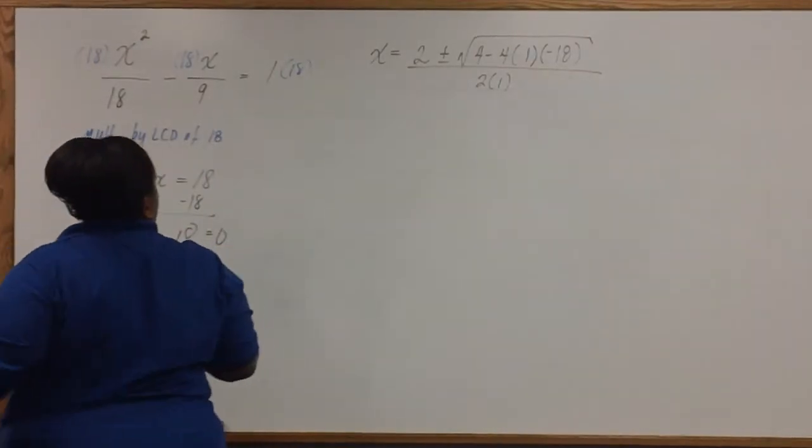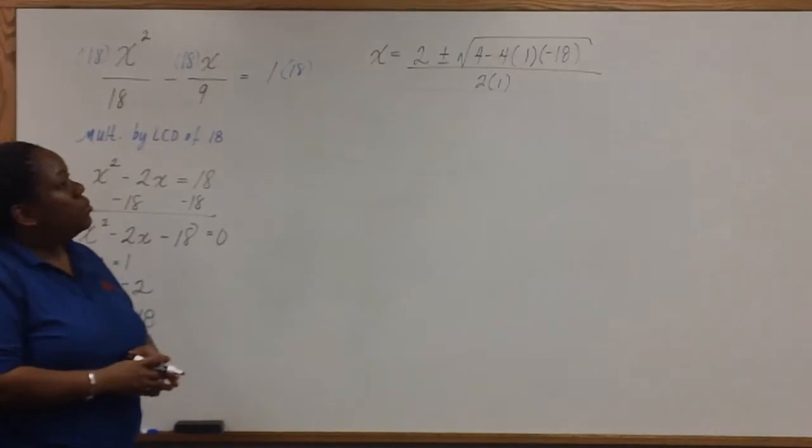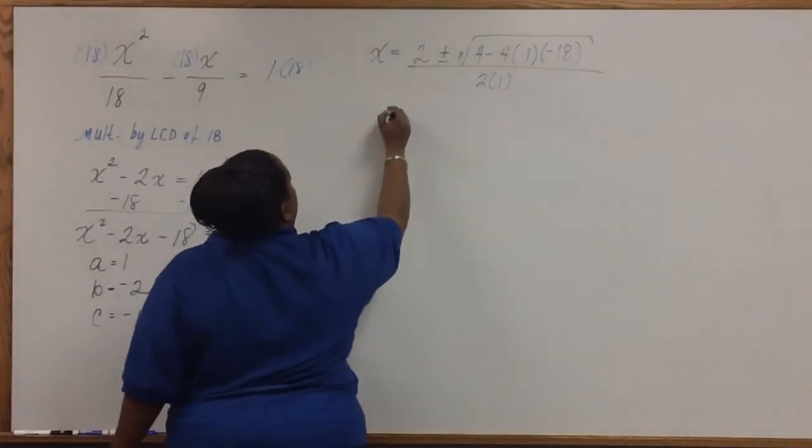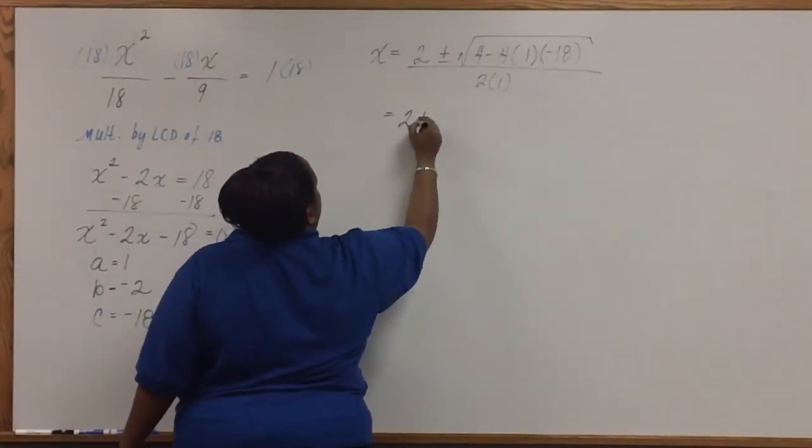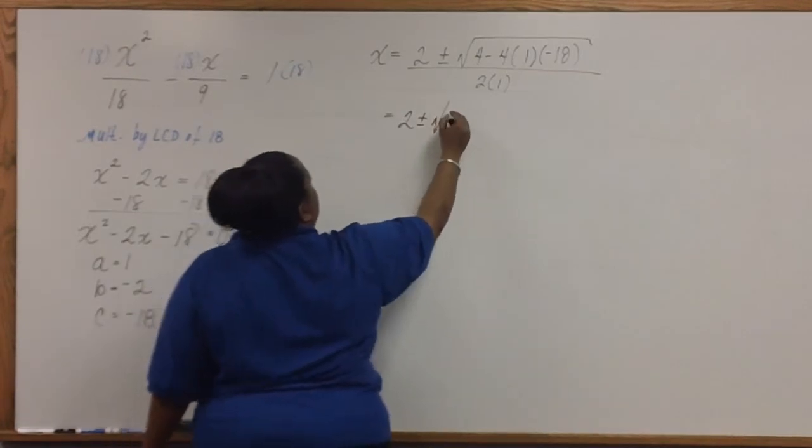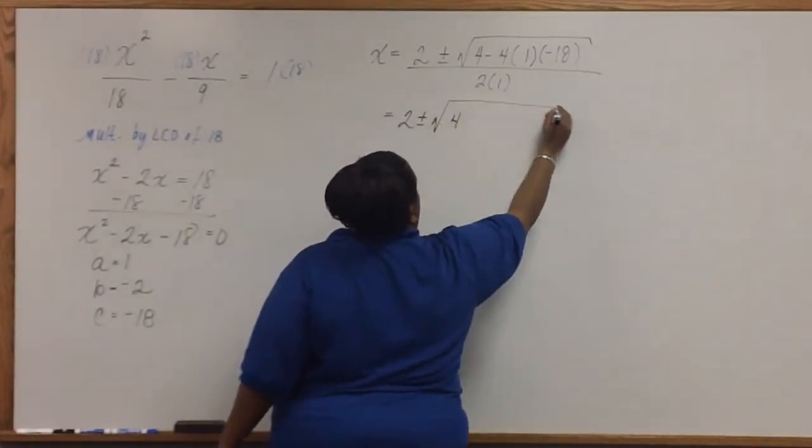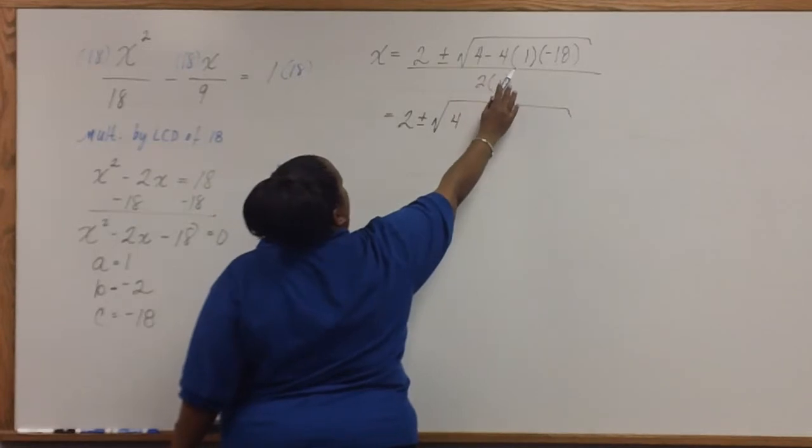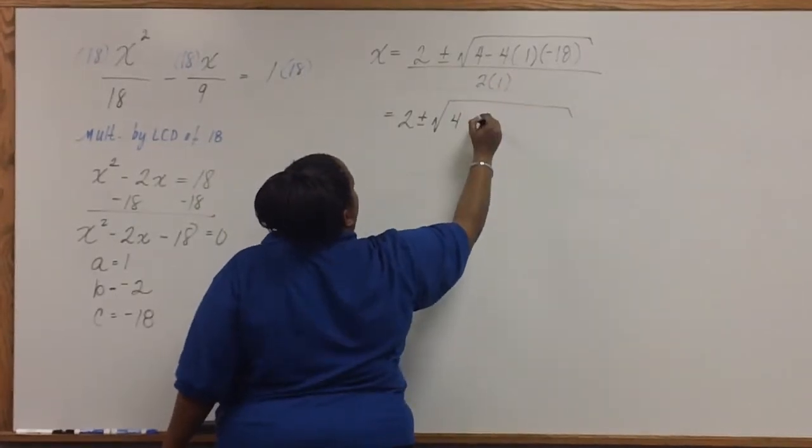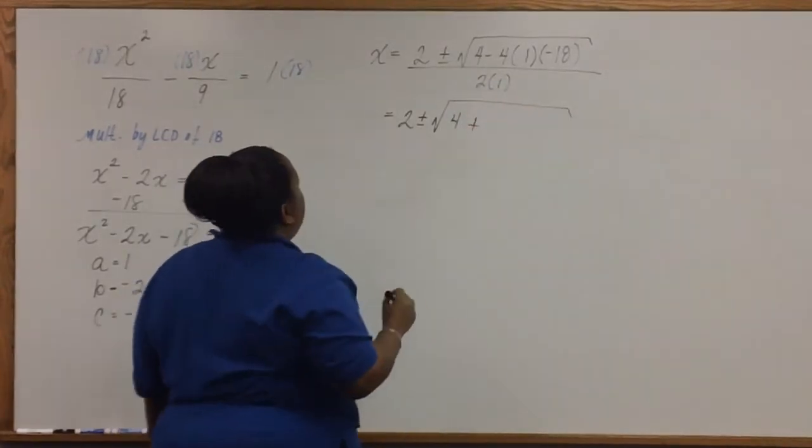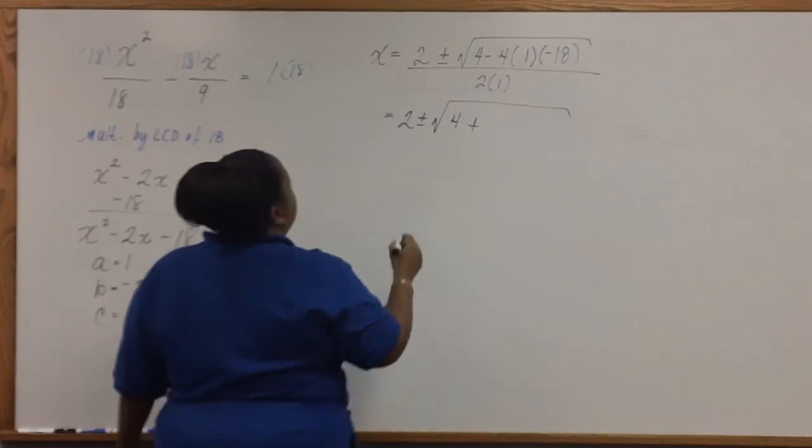So now we just need to simplify under the radical. So we have 2 plus or minus 4. And negative 4 times 1 times negative 18 will give you a positive 72.